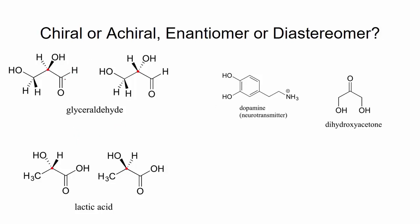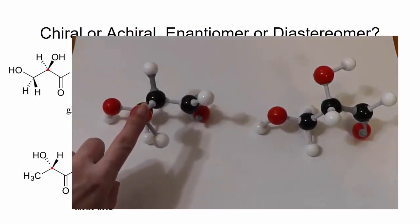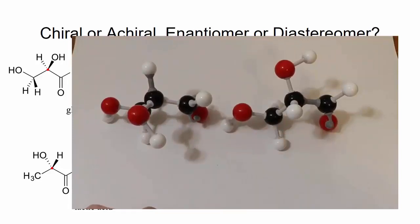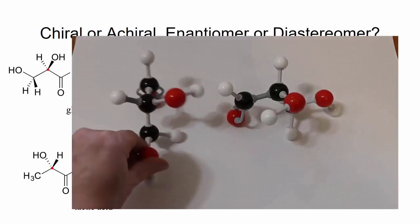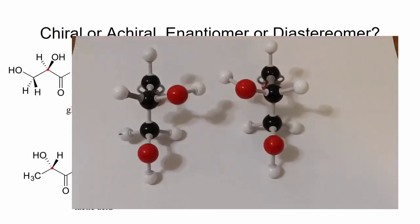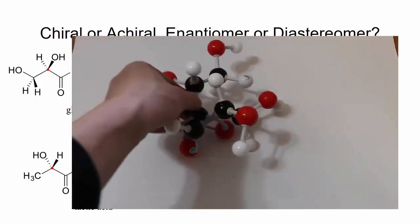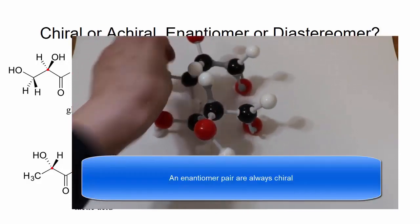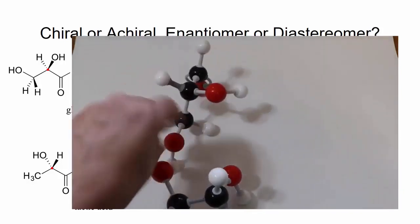Are they chiral, achiral, enantiomers, or diastereomers? Here we have two isomers of glyceraldehyde. The molecule on the left has the alcohol group on the second carbon coming out toward us, and the molecule on the right has the alcohol group in the rear. These are the carbonyl groups. Turning the models to face each other, these are mirror images that are not superimposable upon one another — they are enantiomers and chiral isomers.